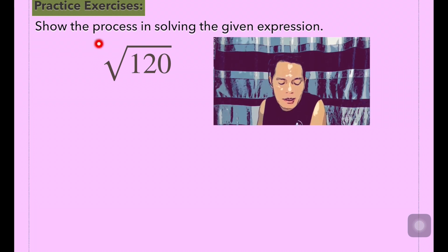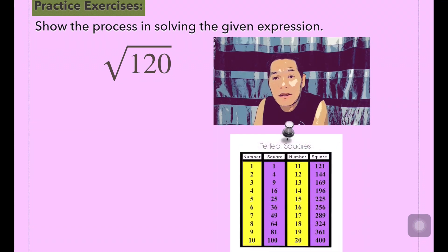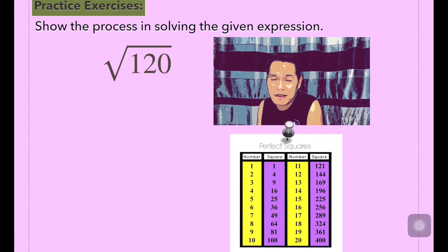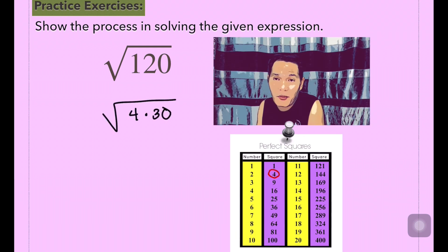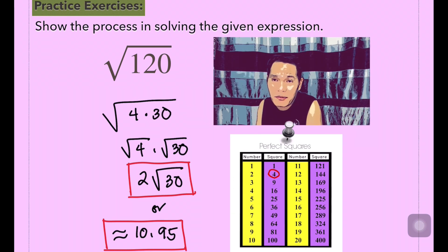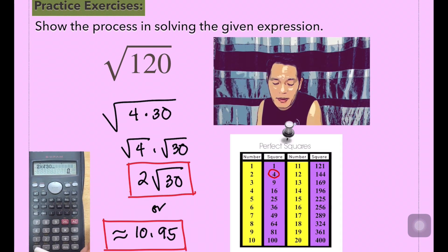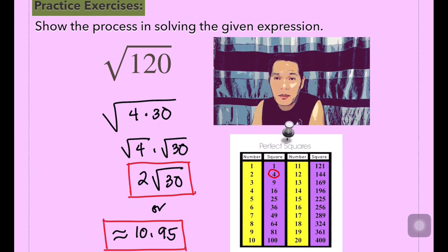The problem is: show the process in solving the square root of 120. Remember, as we recall the perfect squares, 120 is not a perfect square. So let's think of the factors of 120 where one of its factors is a perfect square. It's 4 times 30. Then we simplify — the square root of 4 is 2. We just affix the root of 30 since it's not a perfect square. If you want the exact value, you can use a calculator. The approximated value of 2 square root of 30 in simplified form is 10.95.